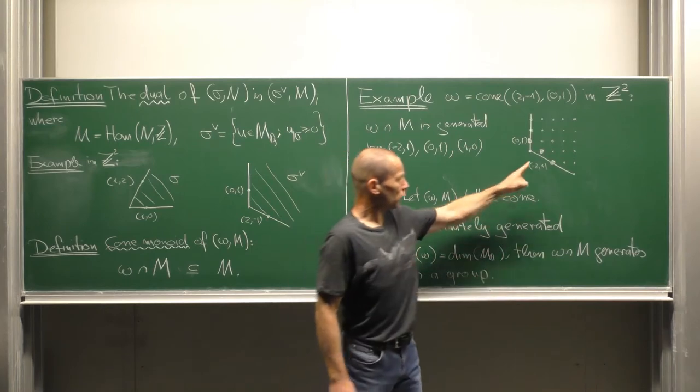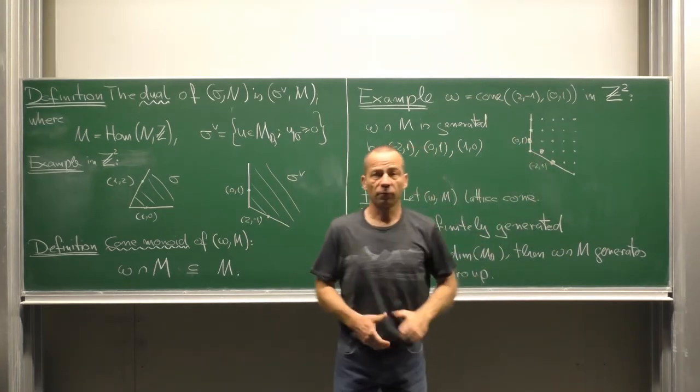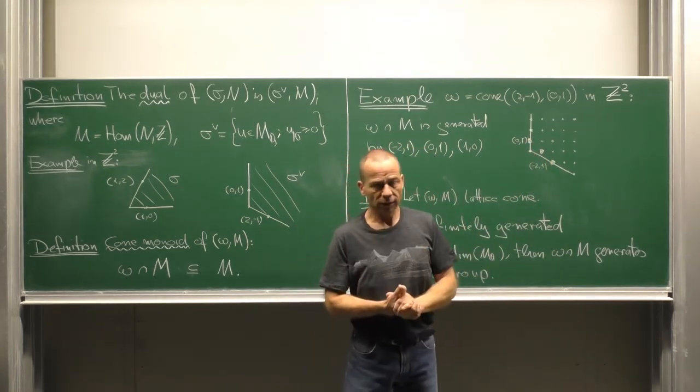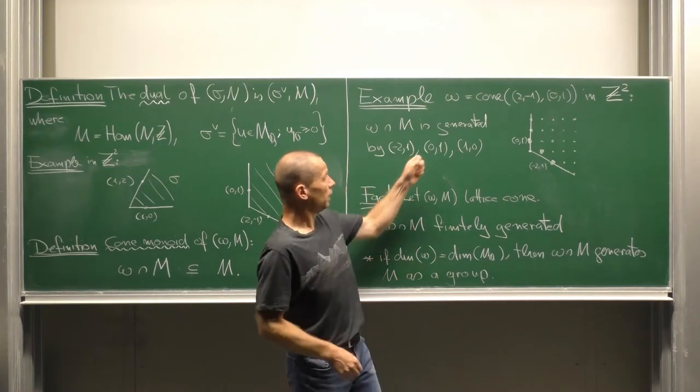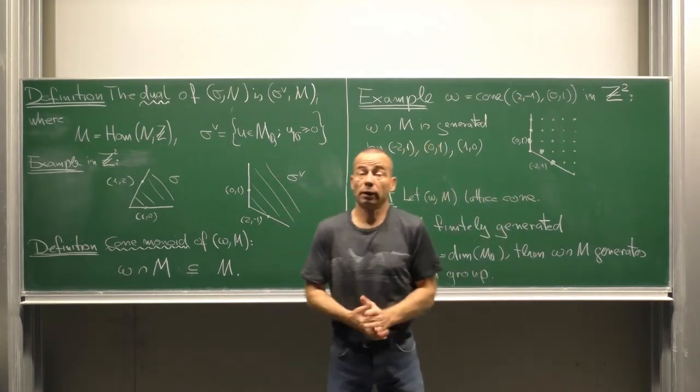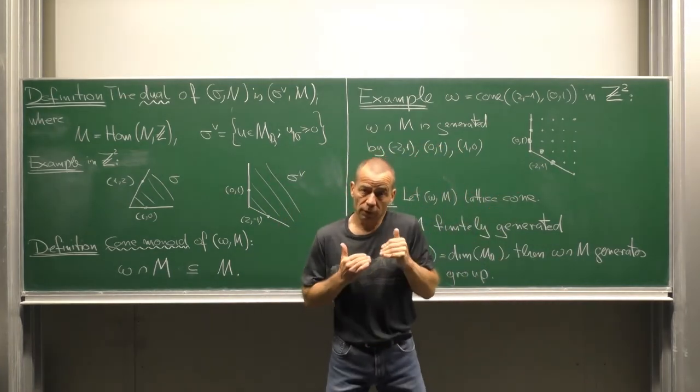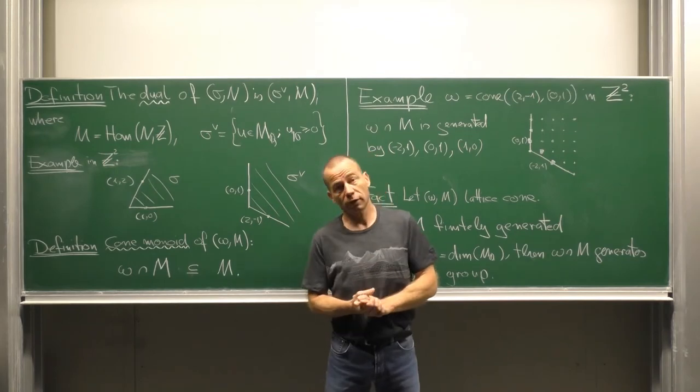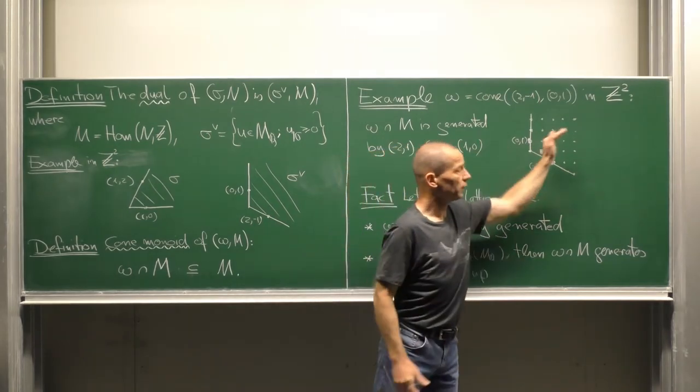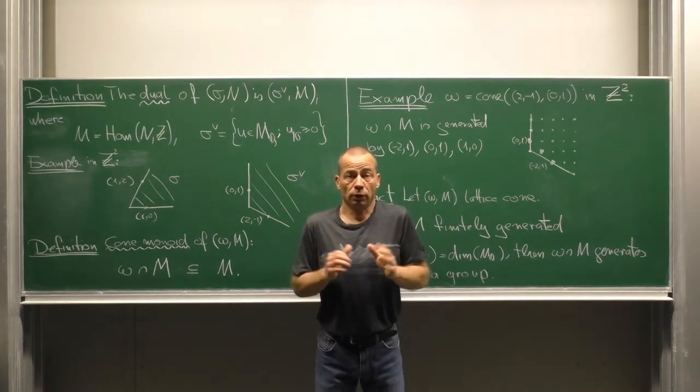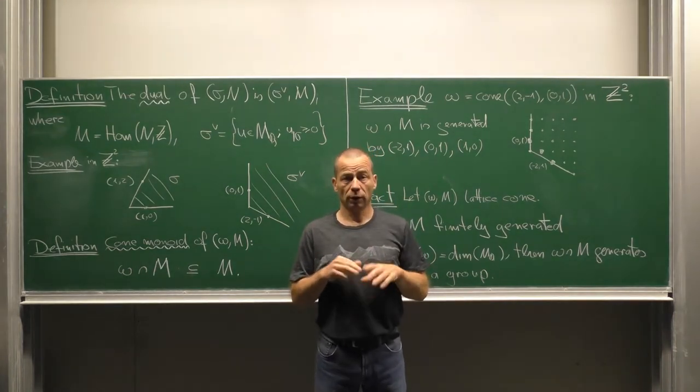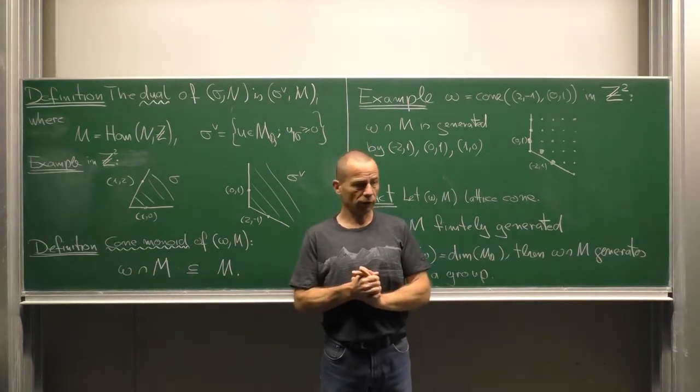This monoid is generated by 3 vectors. We expect for sure the vectors lying on the bounding rays, but we need one more namely (1,0) lying in the middle. So these three vectors generate the monoid in the sense that any lattice point inside the cone is a non-negative integral linear combination of these three points.